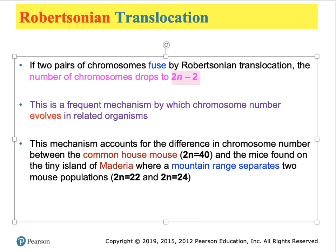Robertsonian translocations have their own genetic issues. If two pairs of chromosomes fuse by Robertsonian translocation, the cell experiences a reduction of two chromosomes (2n-2). Since no information is lost during this process, this is a frequent mechanism by which related species can differ in chromosome number—thought to have happened between human and chimpanzee ancestors. A second example involves mouse populations on the island of Madeira off the coast of Africa.